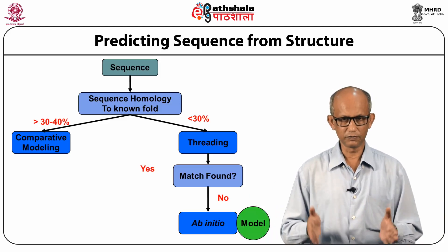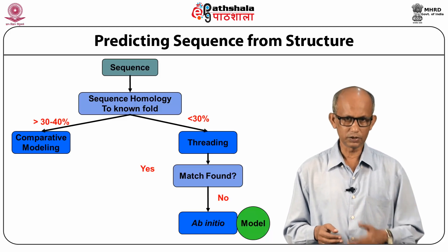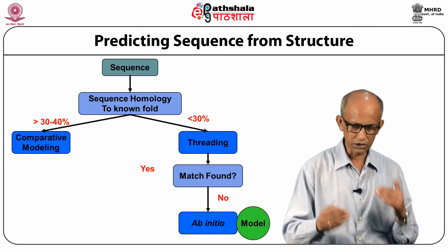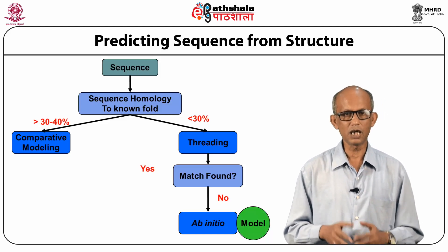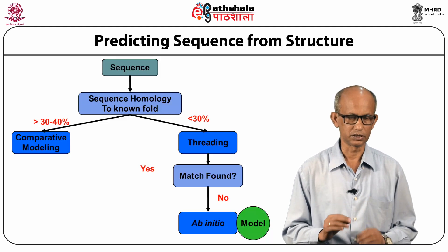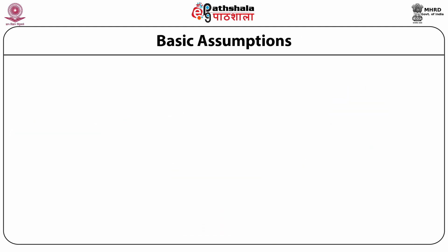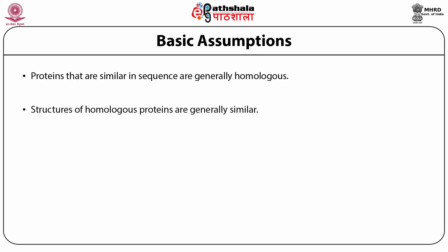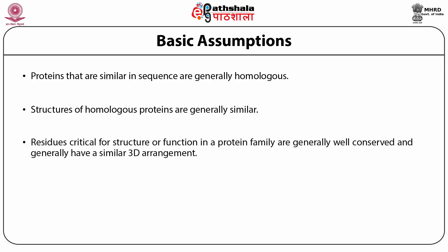So essentially these three different methods exist. Let's start with homology modeling — that is, when the sequence identity between the target and template is at least greater than about 30%. The assumptions behind homology modeling are straightforward: proteins that are similar in sequence are generally homologous, and proteins that are homologous are generally very similar in structure. Residues critical for the structure or function in a protein family are generally well conserved and have a very similar three-dimensional arrangement.